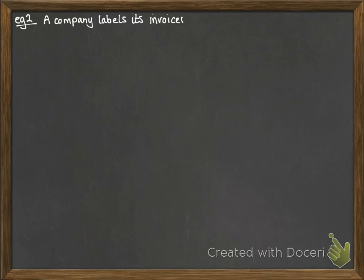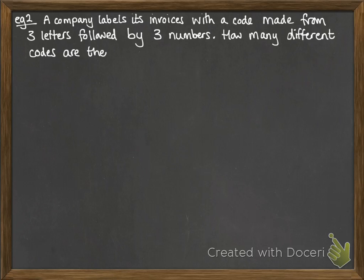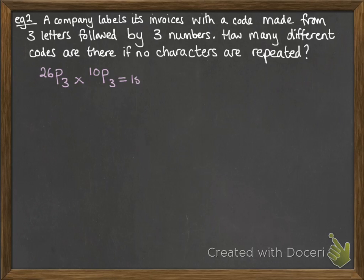Another example. I've taken this from the previous video. It's important that you know there's usually a number of different ways of solving these permutations and combinations questions. So we have done this once by looking at it as logically thinking around arrangements. We can also use permutations to do this one. The company labelling its invoices with a code made from 3 letters followed by 3 numbers, we want to know how many different codes there are if no characters are repeated. So we can do this with permutations by thinking we've got 3 letters. That would be 26 possible things we could choose from, and we're picking 3 of them. Followed by 3 numbers, so there's 10 possible digits from 0 to 9. We're picking 3 of them. Times them together. And you get this, and that's the exact same number that we worked out the other way.